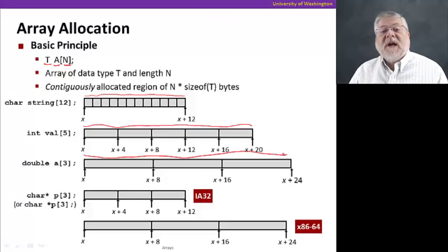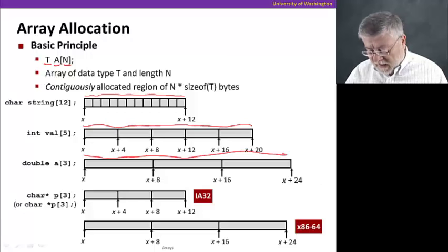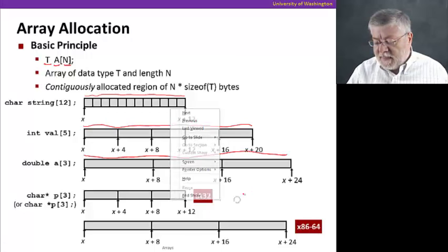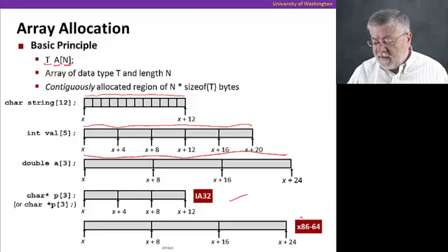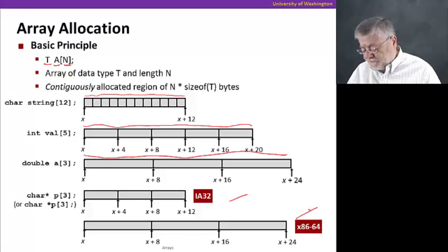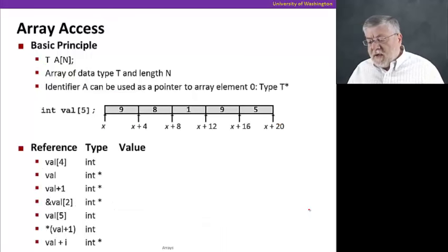For pointers, we have a difference depending on whether we're on a 32-bit or 64-bit architecture. In one case, the pointers are four bytes. In the other case, they are eight bytes, the size of the addresses.